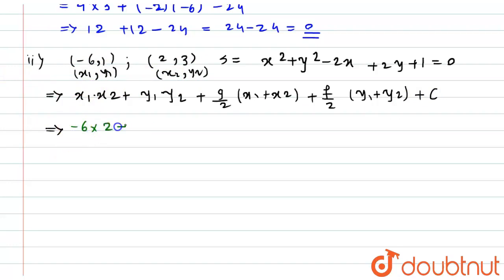-6 multiplied by 2 plus 1 into 3 plus g. Now if you see here, the value of g is nothing but -2. This is nothing but twice of g. This value is the twice of g. So on substituting this here, rather than this, what I can do? Let's say this as it is.